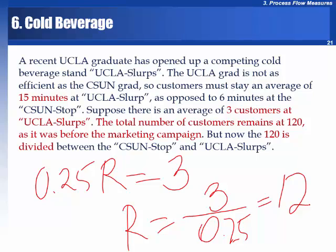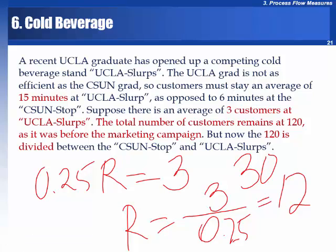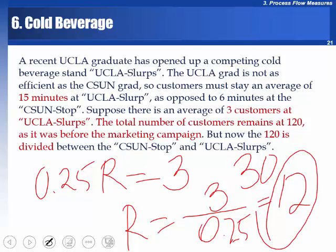So 12 per hour are taken by the competitor. The original business had 30 per hour; 12 is gone, leaving 18 per hour. Over four hours, that is 12 times 4 equals 48 customers taken. If the old store was making two and a half dollars per customer, that's a loss of 30 dollars per hour, or 120 dollars per day — the old business has lost 48 customers per day.